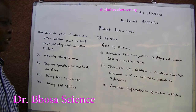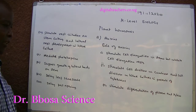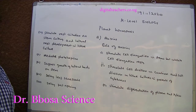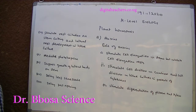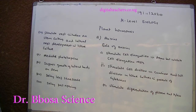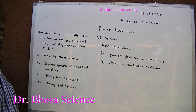Two — stimulates cell division in cambium and cell division in tissue culture in presence of cytokinin. Three — stimulates the differentiation of phloem and xylem. Four — stimulates root initiation on stem cuttings and lateral root development in tissue culture. Five — stimulates the growth of lateral buds on stem. Six — stimulates leaf senescence. Seven — stimulates fruit ripening. Eight — stimulates flowering in some plants.